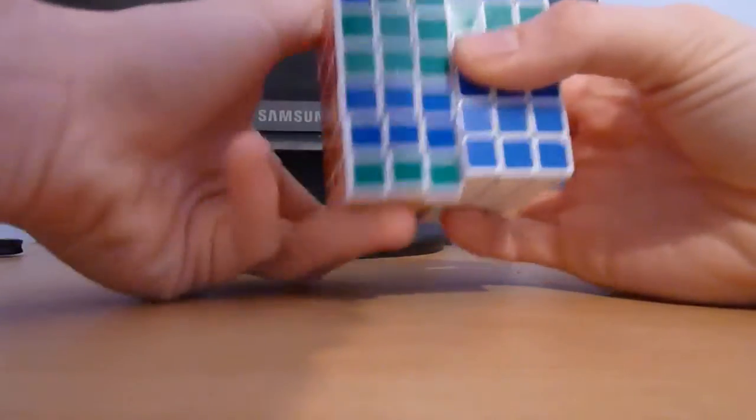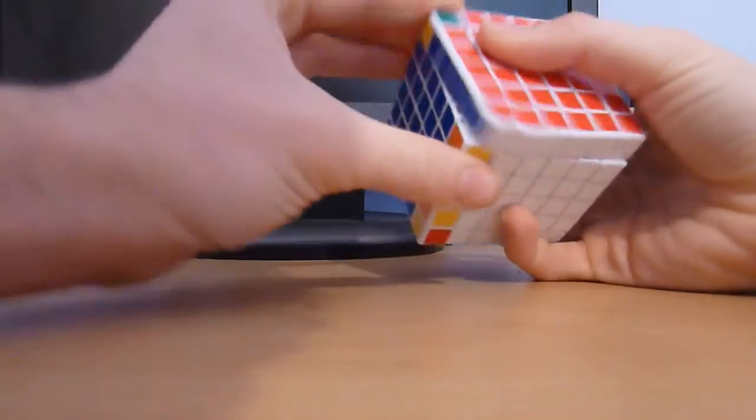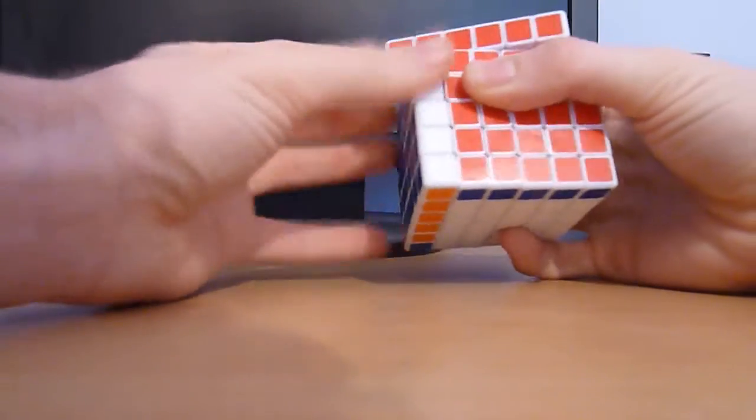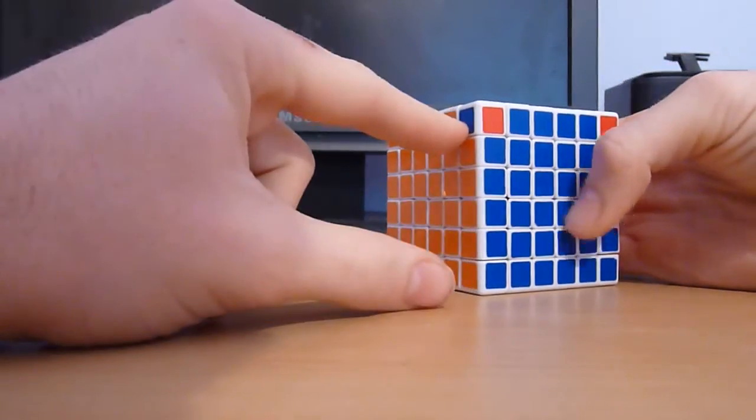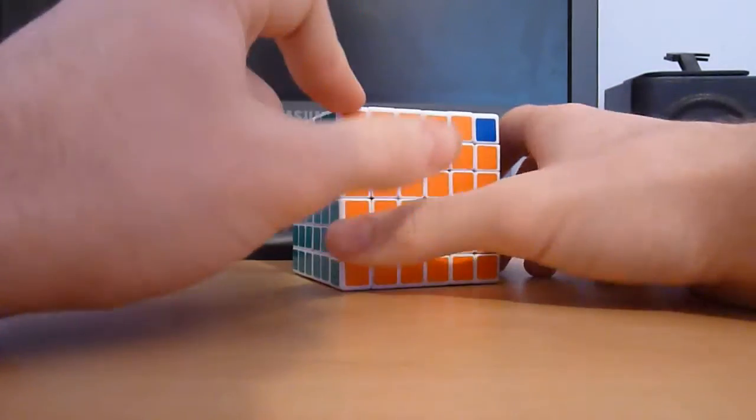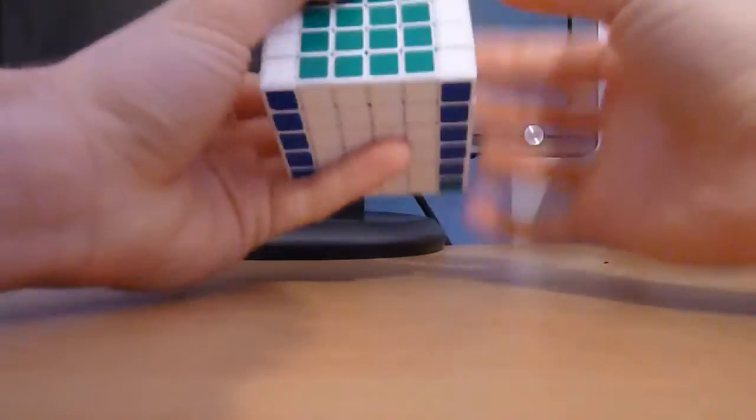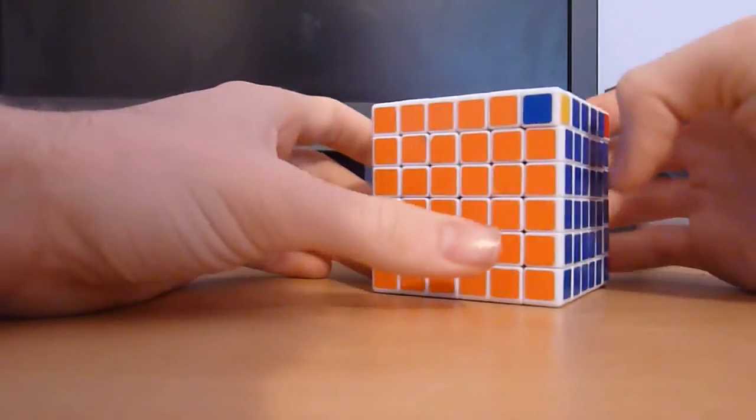So now this corner, this corner, and this corner, none are in place except for this one. Then you solve normally and all of them are in place, then you just orient them.